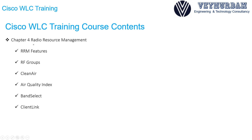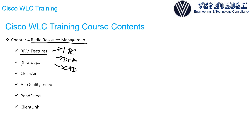In chapter 4 we will go over radio resource management — why we need RRM features and what the different RRM features are, such as TPC and DCA. We will understand coverage hole detection, RF groupings and why we need them, and we will go over Cisco CleanAir technology and the related air quality index. We will also go over band select, how it gives us benefits related to using the 5 GHz band, and we will understand ClientLink technology provided by Cisco to give higher benefits for newer capable devices.